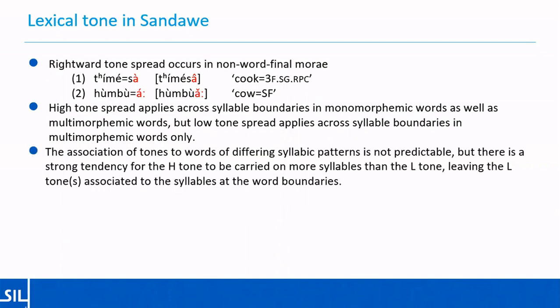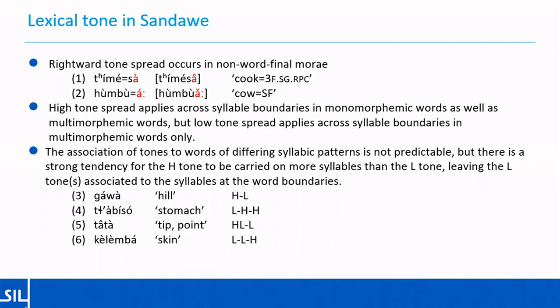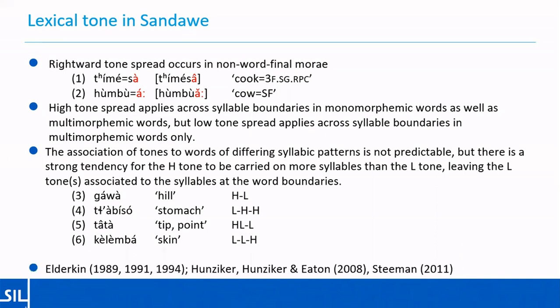The association of tones to words of differing syllabic patterns isn't predictable, but there are some tendencies. There's a strong tendency for high tone to be carried on more syllables than the low tone, leaving low tones associated to syllables at the word boundaries. Examples like gawa and klabiso, where the only low tones are word-initial or word-final, are more common than examples like tata and gelimba, where there are word-medial low tones as well. There's obviously a lot more going on in lexical tone — please see the references for more details, particularly those from Ed Elderkin.